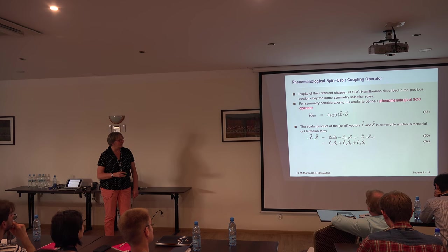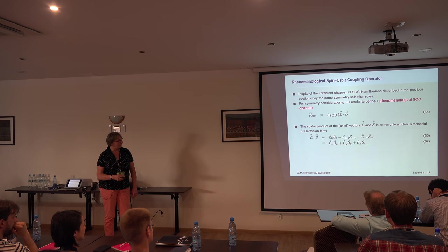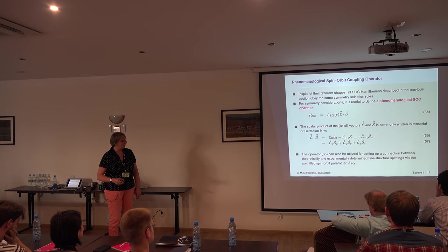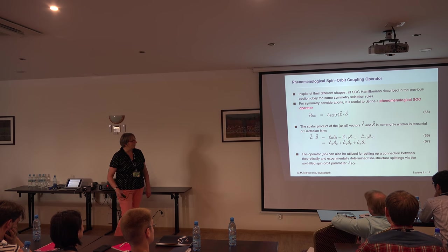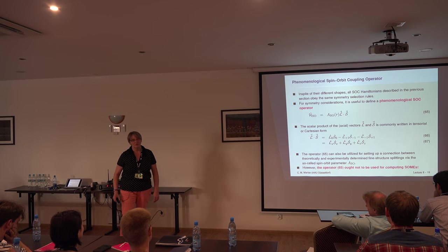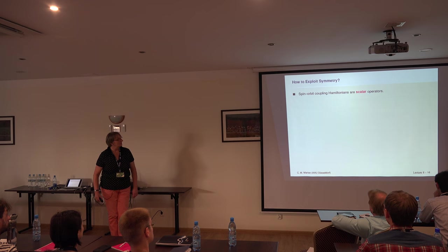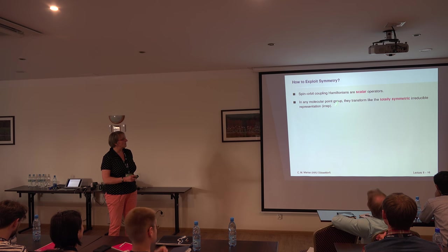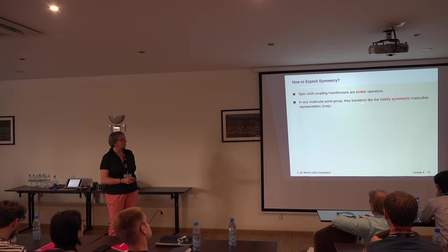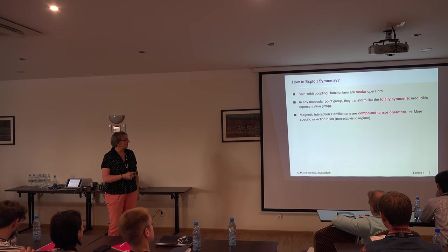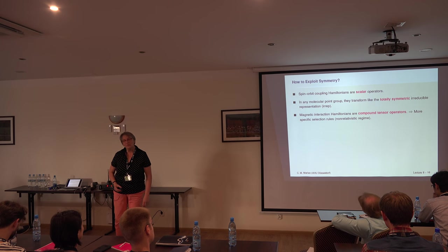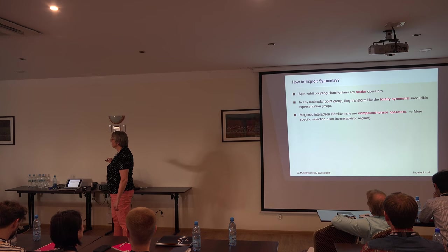The scalar product of L and S can be written in Cartesian components — the X, Y, Z components — or using tensor components. The spin-orbit Hamiltonian is a scalar operator, so it is totally symmetric. We can get more detailed selection rules by recognizing that these are compound tensor operators: the spin part is a first-rank tensor and the space part is a first-rank tensor.